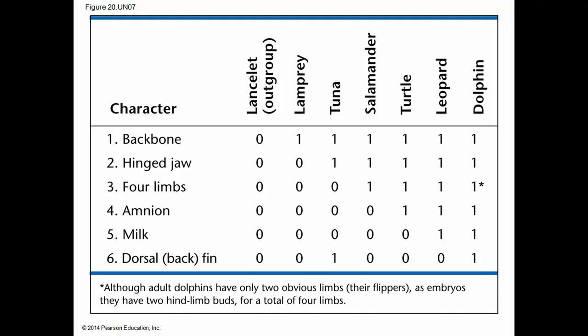Here's a character table showing: backbone, hinged jaw, four limbs, amnion, milk, and a dorsal fin. Only the tuna and the dolphin share the dorsal fin trait, but they're not related — this is an example of analogy. Although adult dolphins have only two obvious limbs — their flippers — as embryos they have two hind limb buds and a total of four limbs.